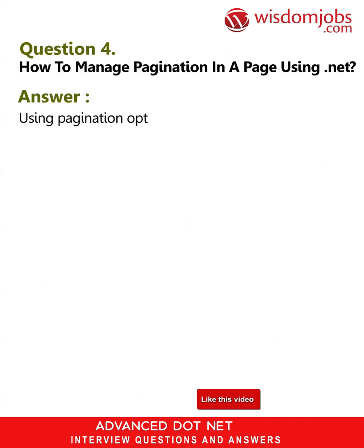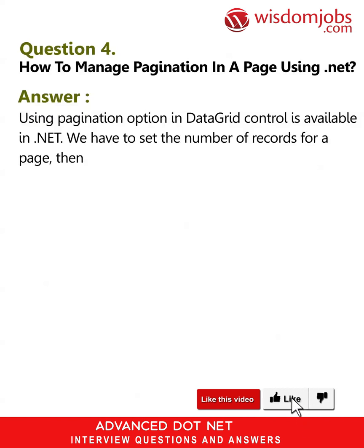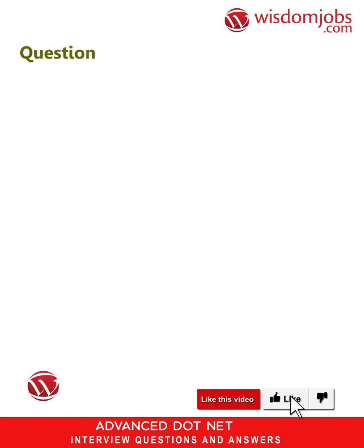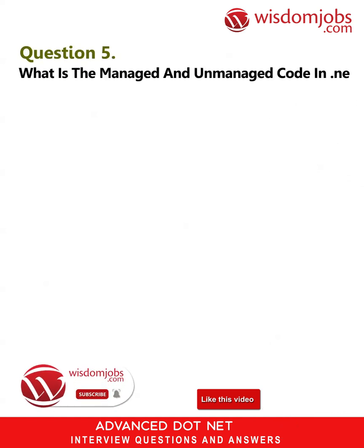Question 4: How to manage pagination in a page using .NET? Answer: Using the pagination option in the DataGrid control available in .NET, we have to set the number of records for a page, then it takes care of pagination by itself automatically.